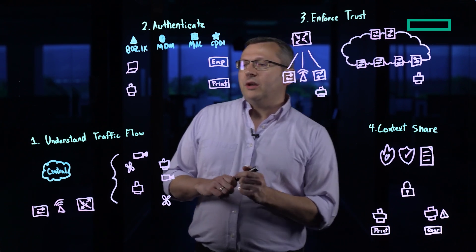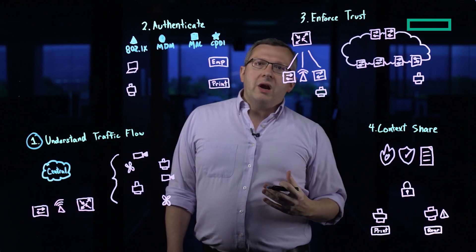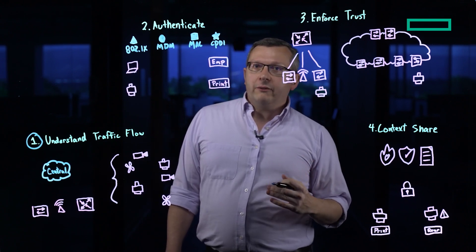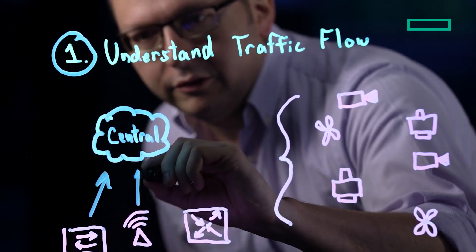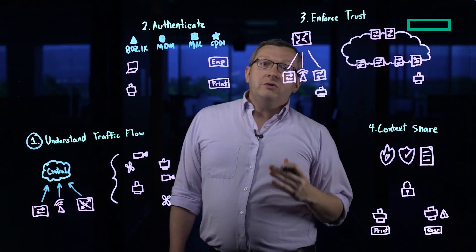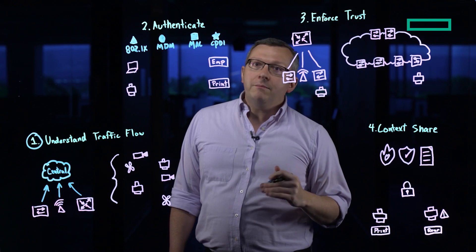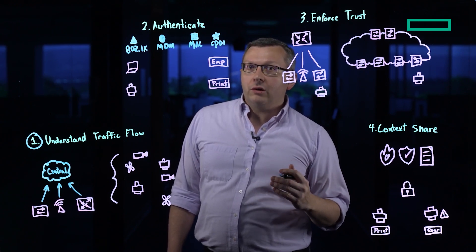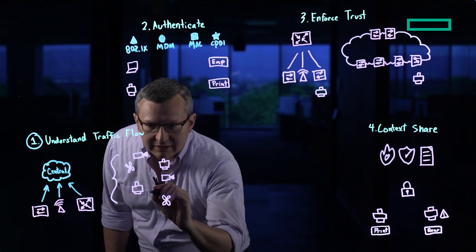The first step is really all about understanding the flows on your network. Understanding flows requires that you have a good idea of the type of data that different devices are sending. We can send information about the type of flows up to central. That not only gives you visibility, but it gives central the ability to determine the endpoint types you have on your network. Using tools like machine learning, we're able to easily organize and sort different device types into buckets.